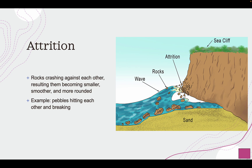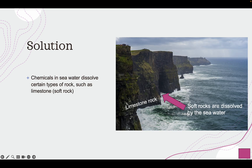Attrition is when rocks crash against each other, resulting in them becoming much smaller, smoother, and more rounded. Imagine huge rocks from a cliff crashing into each other — they break each other apart and eventually become smaller and rounder. An example is pebbles hitting each other and breaking. Solution — as in chemistry — is when chemicals in seawater dissolve certain types of rock. Certain rocks are soluble in water, for example limestone. We call these soft rocks, and they get dissolved by the seawater, becoming part of the solution.